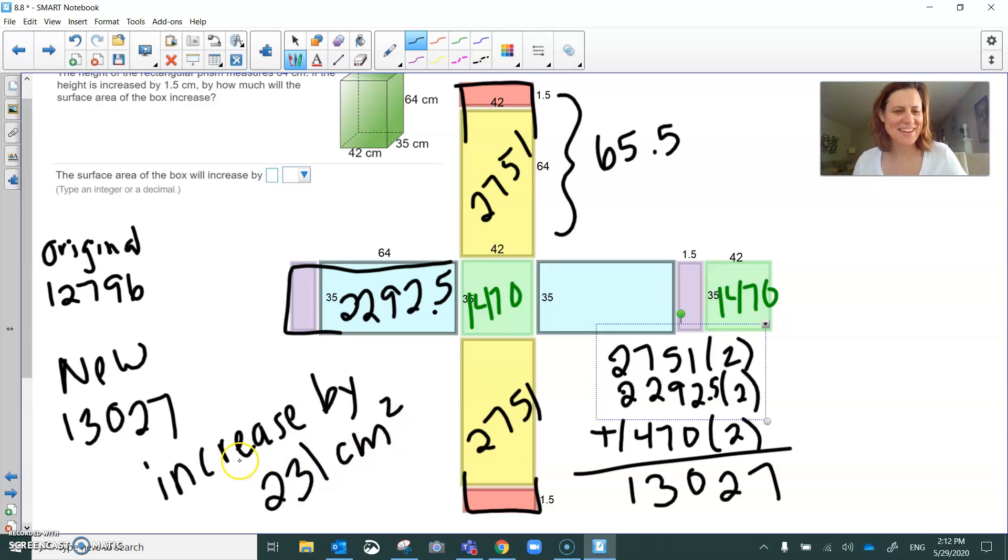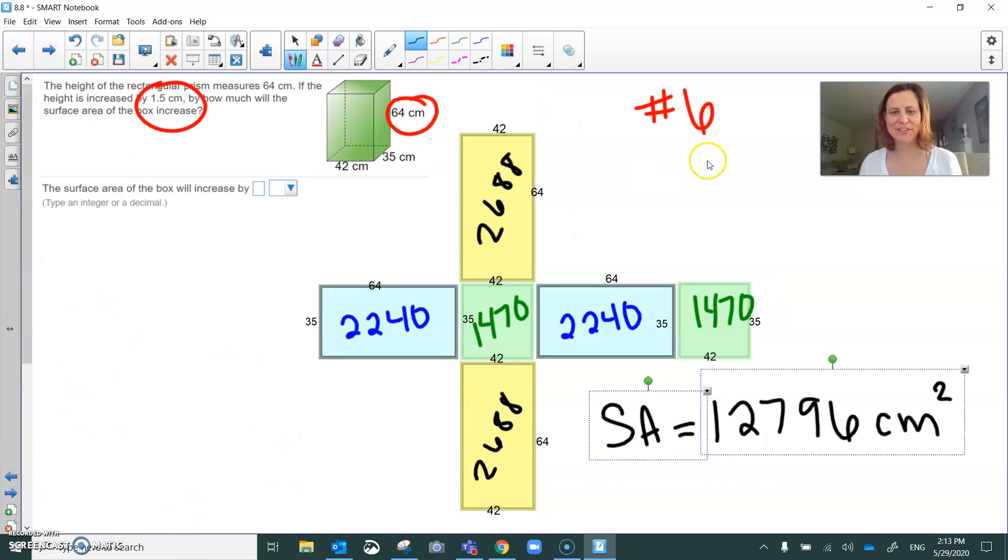And now I'm going to do that thing where I type the answer just to make sure that I'm right. I'm not right. What do you know? Okay, let's check our work. This was the first guy. Okay, so make sure I'm right. 42 by 35. 42 times 35 is 1470. I feel good about the green parts.